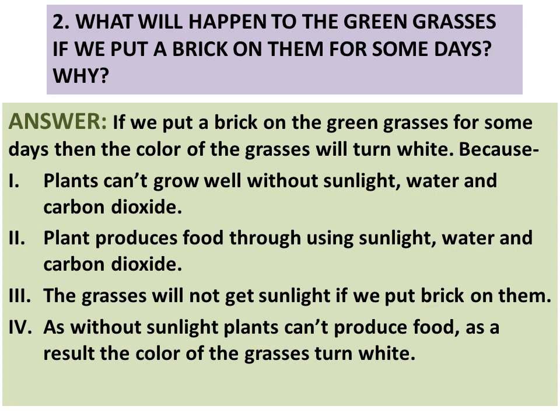Question two: What will happen to the green grasses if we put a brick on them for some days, and why? Answer: If we put a brick on the green grasses for some days, the color of the grasses will turn white. Because: plants can't grow well without sunlight, water, and carbon dioxide; plants produce food using sunlight, water, and carbon dioxide; the grasses will not get sunlight if we put a brick on them; and as a result, without sunlight, plants cannot produce food, so the color of the grasses turns white.